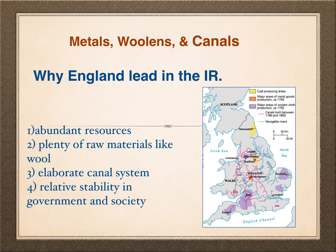I basically think four reasons. If you look at the top of the slide, it says metals, woolens, and canals — and basically that says it all. England had abundant resources: coal deposits, iron deposits, copper deposits. This is natural to the geography and layout of England. They had plenty of raw materials like wool for their textile industry because they had a great sheep livestock program. They had an elaborate canal system, which was government-funded and a public project.